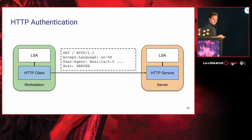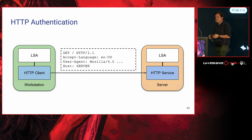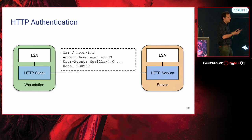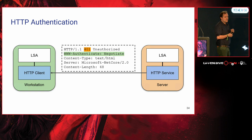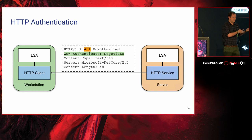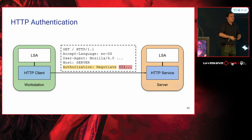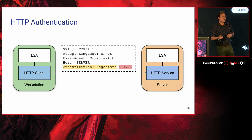Another protocol of interest is HTTP. Active Directory Certificate Services uses a simple HTTP-based Windows authentication flow: the client makes a request, the server returns a 401 unauthorized with a WWW-Authenticate header specifying Negotiate. The client kicks off its Windows authentication loop using SSPI, generates a token, base64-encodes it, puts it in an Authorization header, and sends it back — this can go on for multiple hops until authentication succeeds.